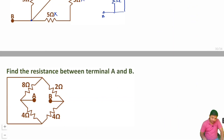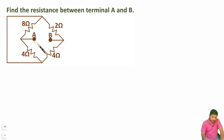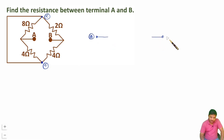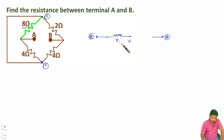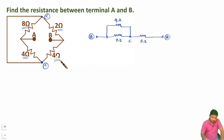In the fourth question, we need to find resistance between terminals A and B. Let us consider terminal A, terminal B, and an intermediate point C — noting that two nodes are shorted together as a single point C. Redrawing the circuit: between A and C, an 8-ohm and a 4-ohm resistor are connected. Between C and B, a 2-ohm and a 4-ohm resistor are connected.